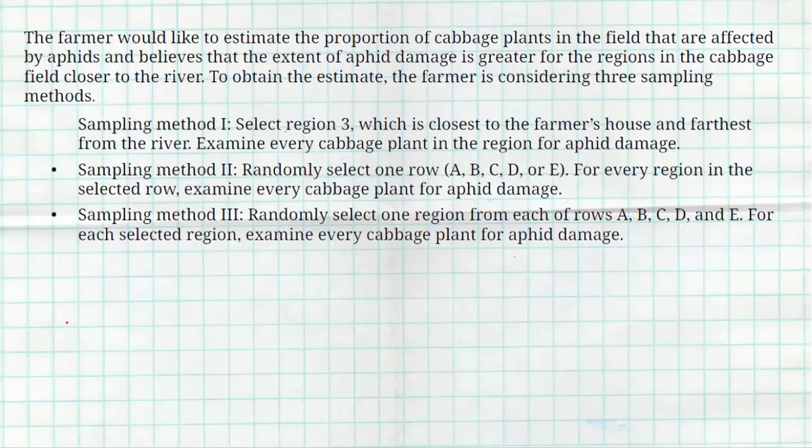So be careful because sometimes you've got to really think about the difference between two and three. For sampling method two, he's labeling the rows and selecting one row. Every single cabbage plant in that entire row, all those regions, is going to be used. That would be a cluster sample. Sampling method three is more stratified. He's broken them up into rows, row A, B, C, D, E, and then he's going to select one region from each row.